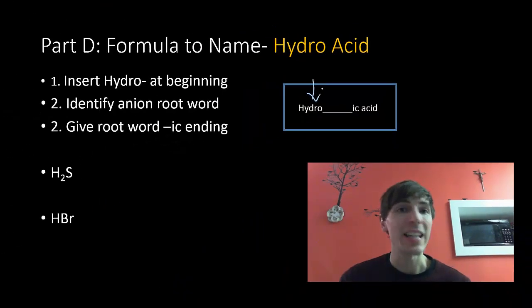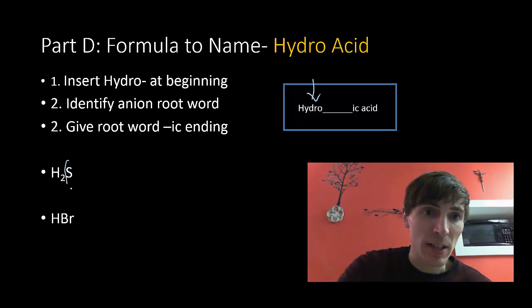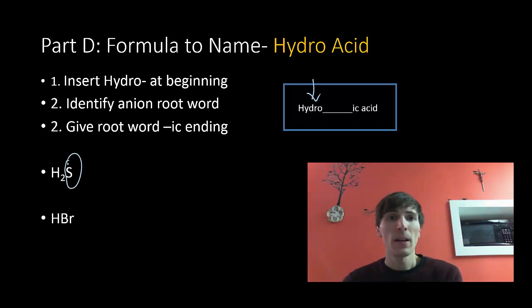We're going to identify the anion that we have present, what hydrogen is paired up with. And we need the root word, the root word without the ending. So I look at H2S and I notice that there's S there. The anion of just S we would call sulfide. So we're looking at that root word, sulf, sulfur.